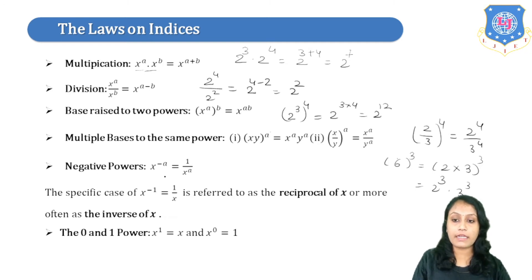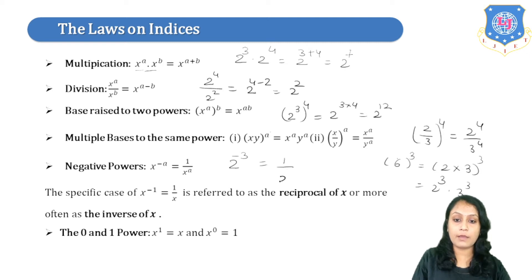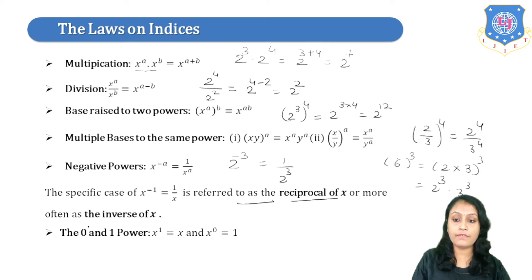The next law is negative power: if we have x raised to minus 8, it will become 1 upon x raised to 8. For example, 2 raised to minus 3 becomes 1 upon 2 cubed. A specific case is x raised to minus 1, which equals 1 upon x — this is referred to as the reciprocal or inverse of x.